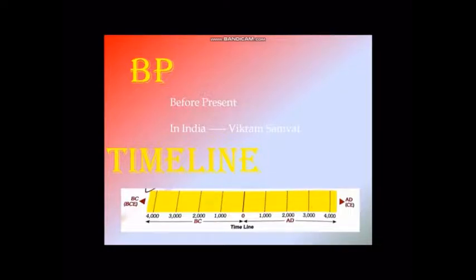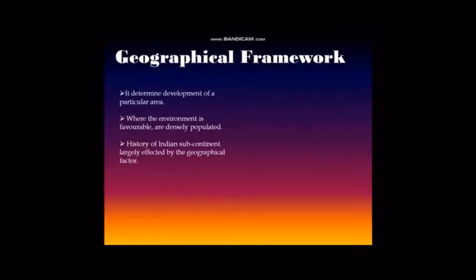Next, Timeline. In order to depict historical events in chronological order, historians use the timeline. It looks like a long bar showing the events of the past and their dates.